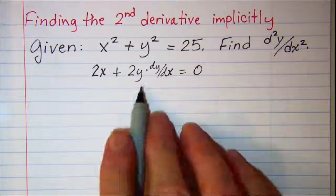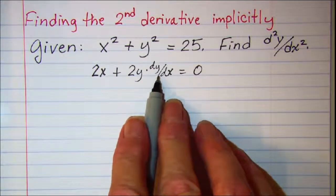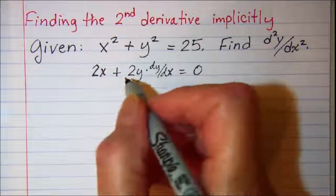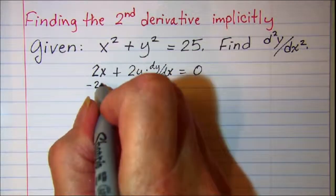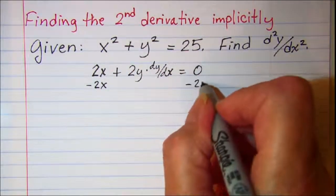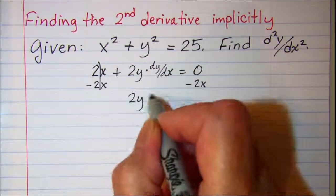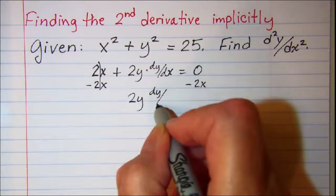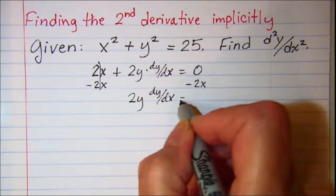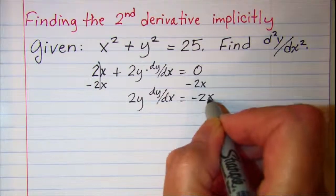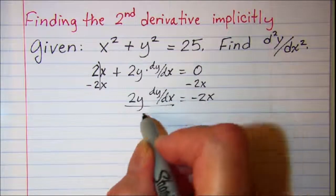Now we need to solve for dy/dx. So let's subtract 2x from both sides. So cancel, we have 2y dy/dx equals negative 2x. Divide both sides by 2y.